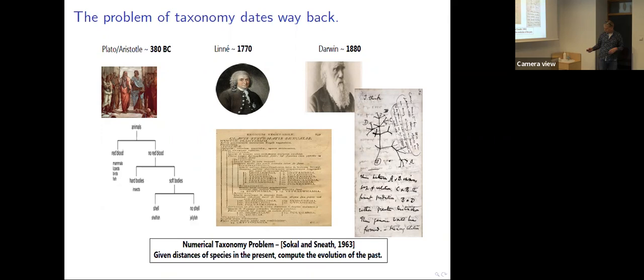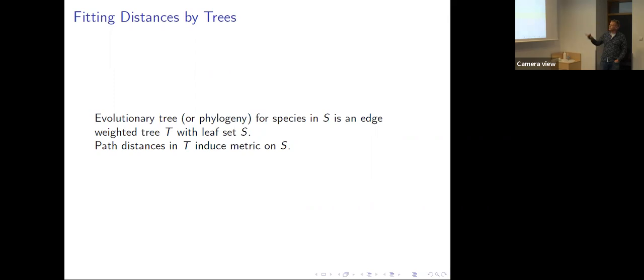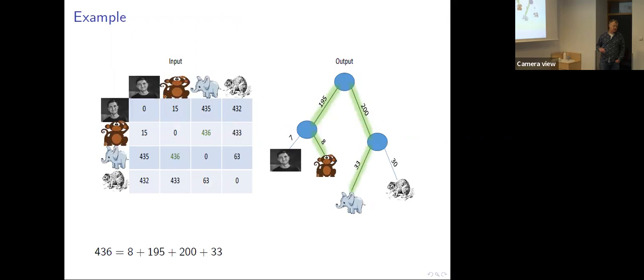Let's get to the math. We're dealing with what we call an evolutionary tree for some set of species S — that's just an edge-weighted tree with leaves at S. The distance from a leaf to some internal node can be zero. The path distances in the tree induce a metric on S. Here's an example where a metric and these species have a corresponding tree and it's actually a perfect match. When you add up the weights you get exactly 436, which is the path from the monkey to the elephant. The hyrax, the closest relative of the elephant, has a shorter distance of 66.